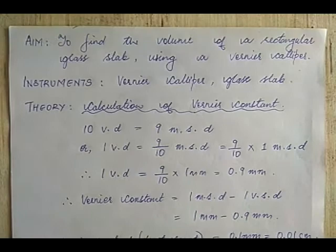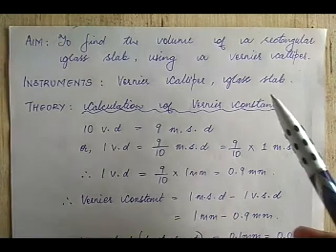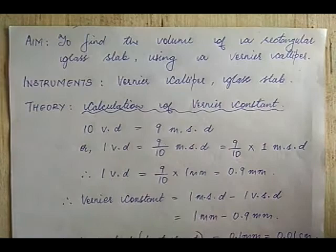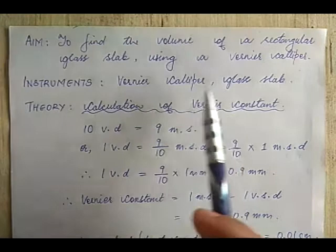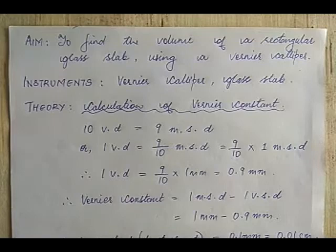This video is a demo of an experiment where we are going to find the volume of a rectangular glass slab using an instrument called a vernier caliper, or also called a slide caliper. The aim or objective of the experiment is to find the volume of a rectangular glass slab using a vernier caliper.